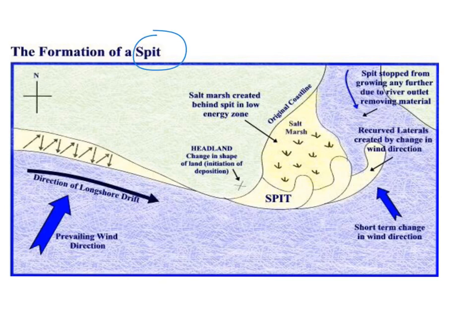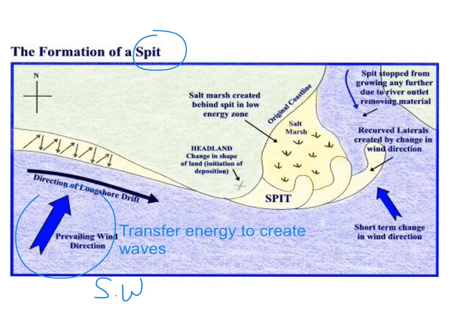It starts off here with the direction of the prevailing wind. In the case of the UK, this is coming from the south west. This then transfers energy, and this energy creates waves. The waves then move up the beach — this is called the swash — and back down the beach, which is called the backwash. This then moves sediment along the coastline.